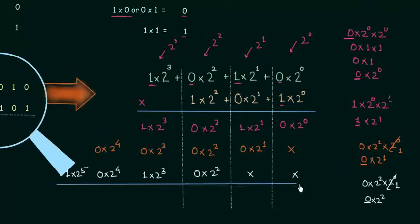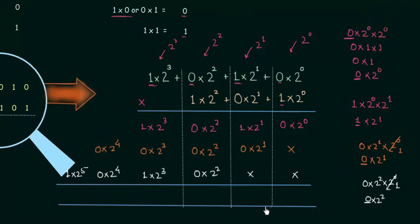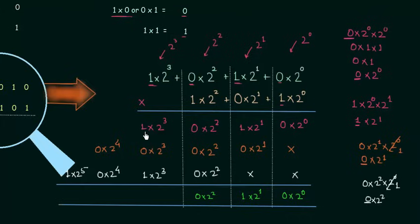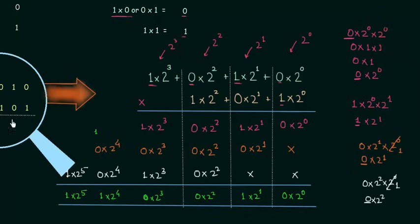Now we will perform the addition — this is why we revised the results of binary addition. We add the results in each column. In the first column we have only 0. In the second column we have 1 and 0; 1 plus 0 is 1. Then 1 plus 0 is 1, and 1 plus 1 gives sum 0 and carry 1. In the fifth column we have 1 plus 0 plus 0, giving sum 1 and carry 0. In the last column we have 1, which is 1 multiplied by 2 raised to power 5.